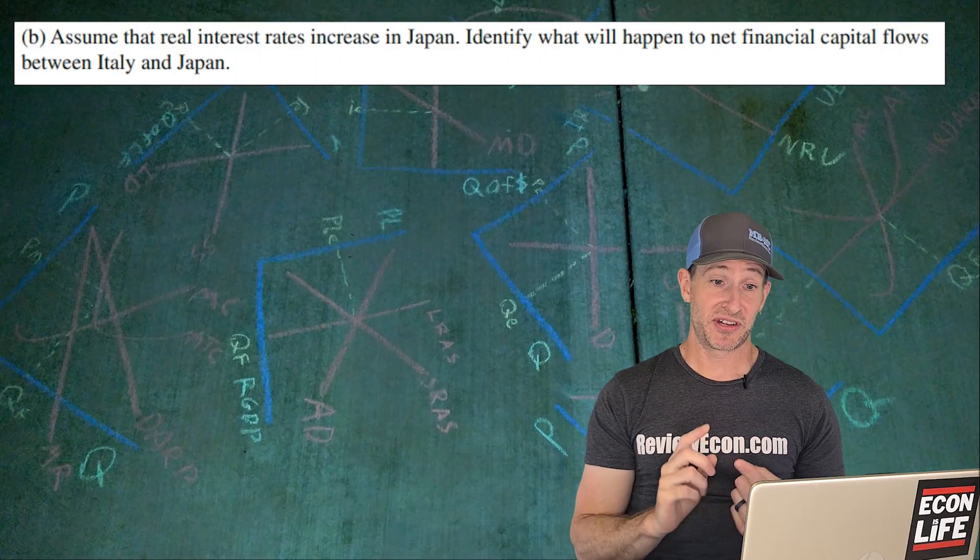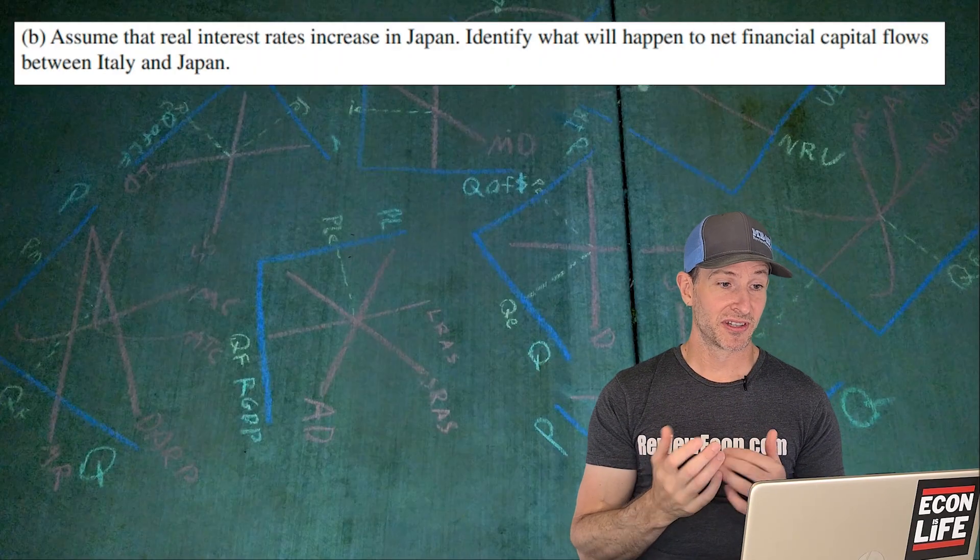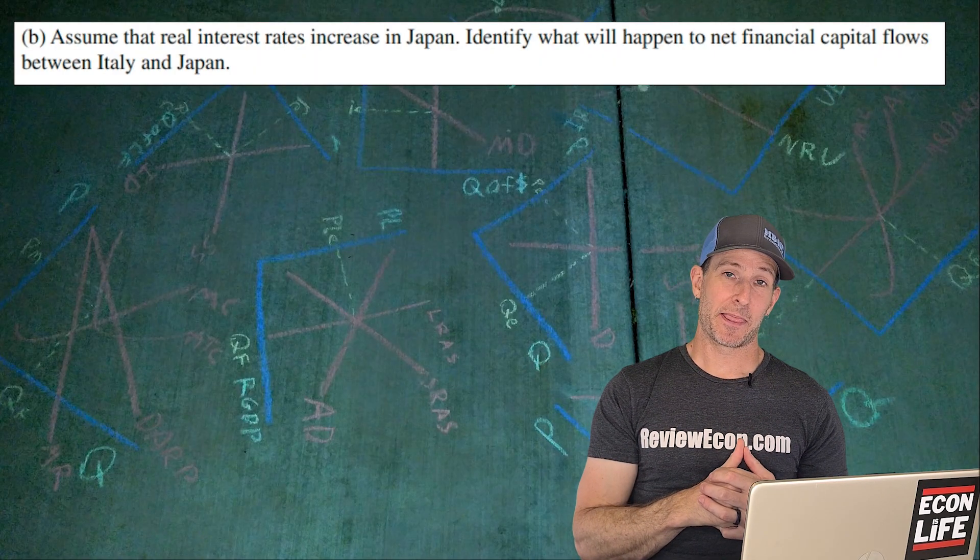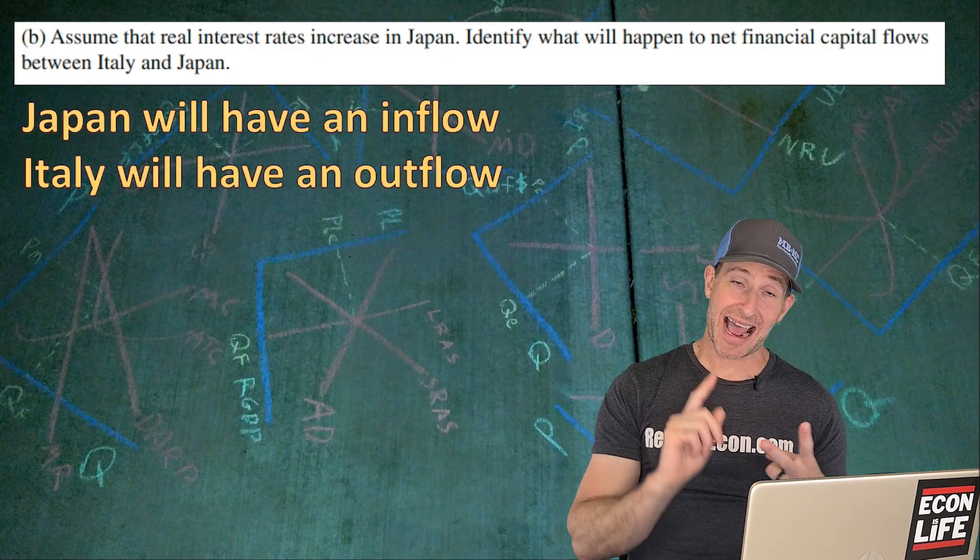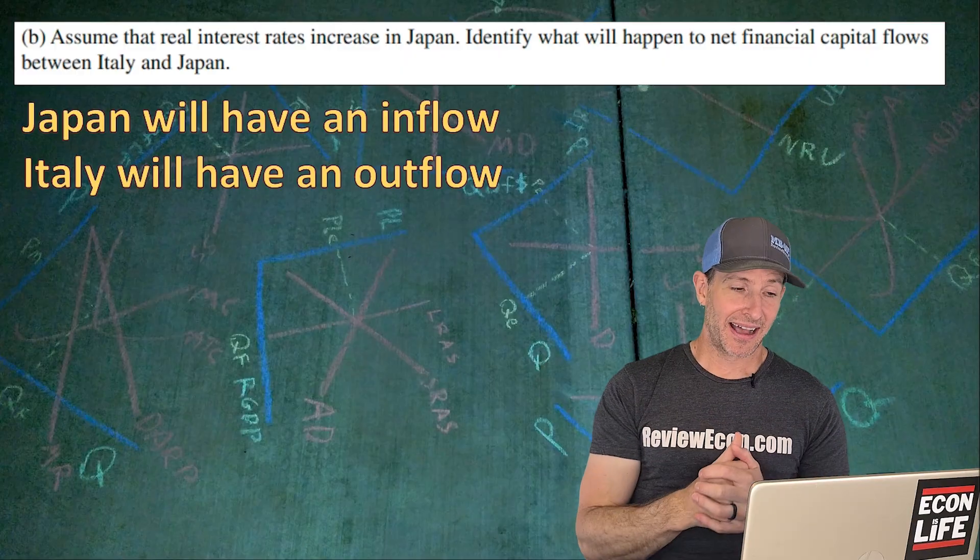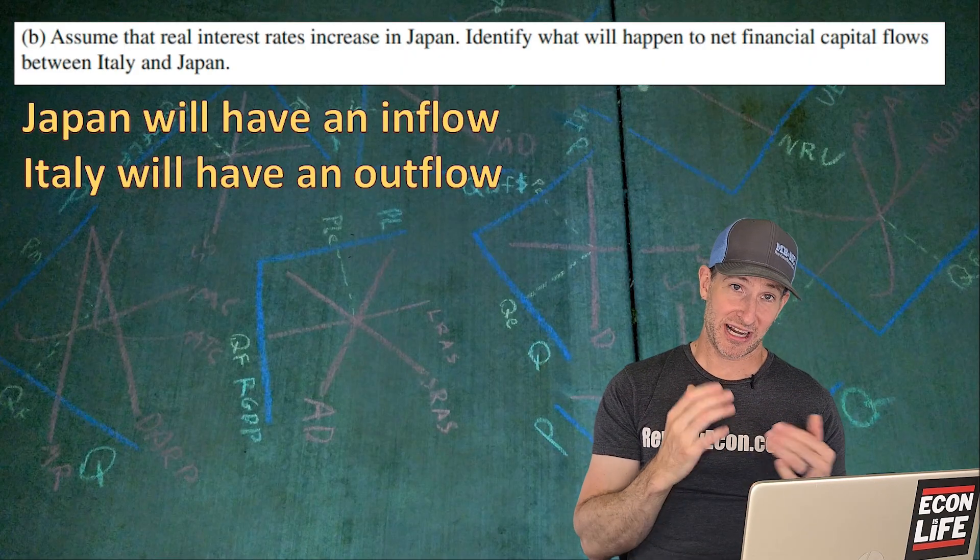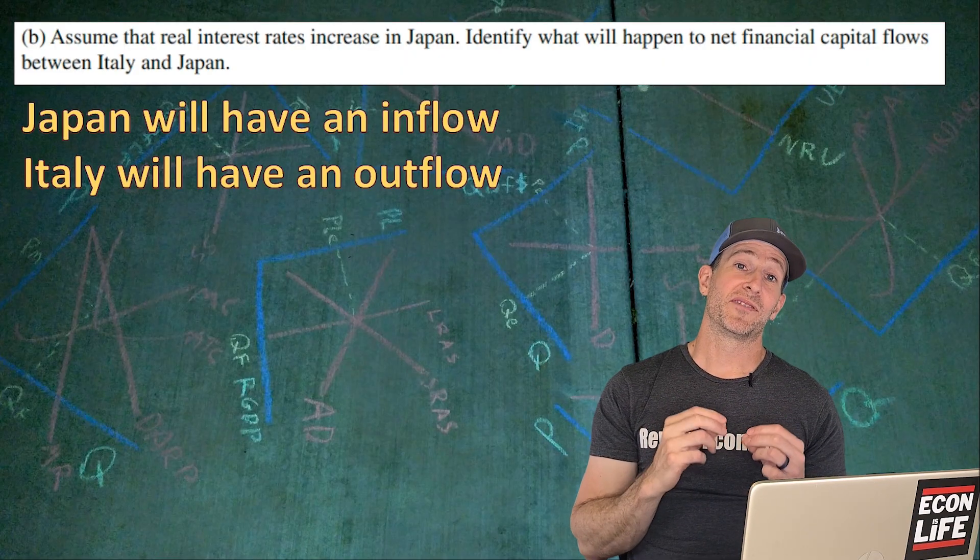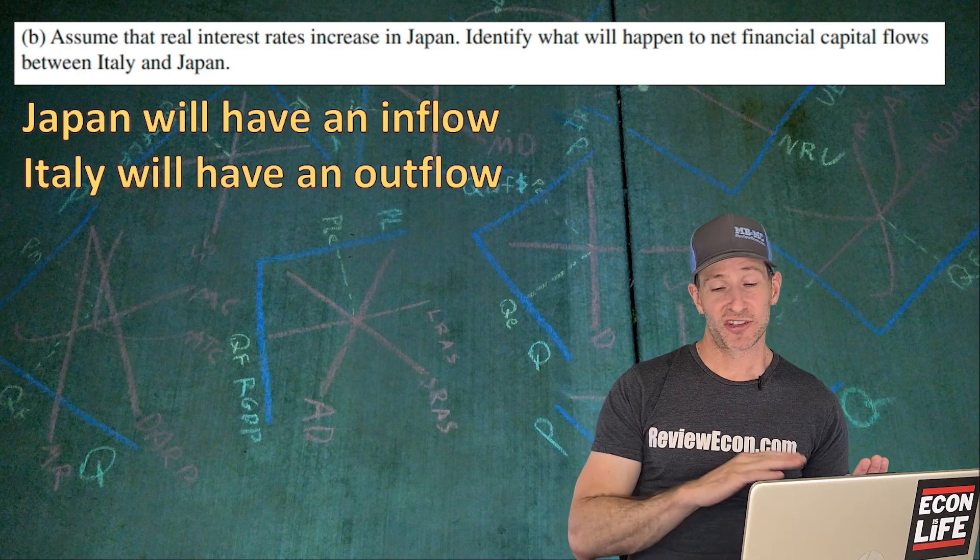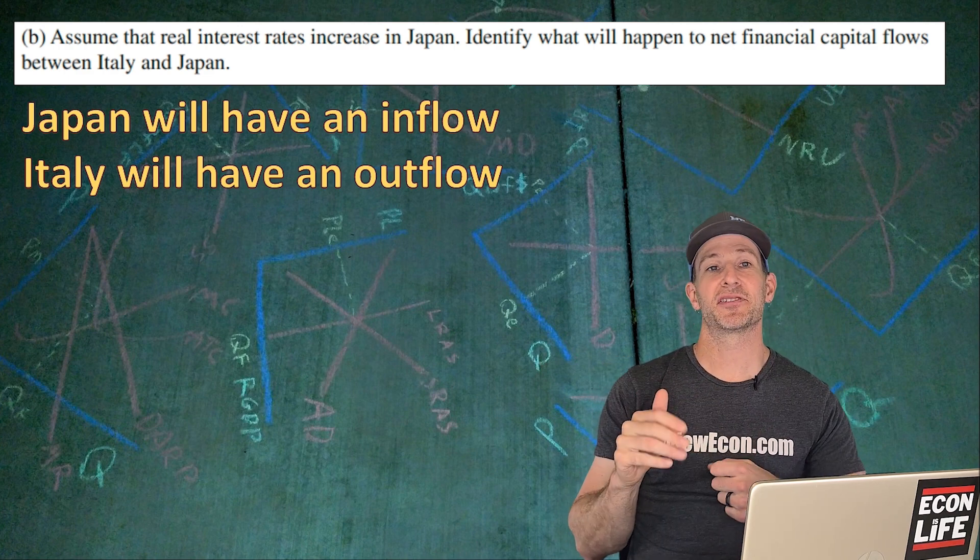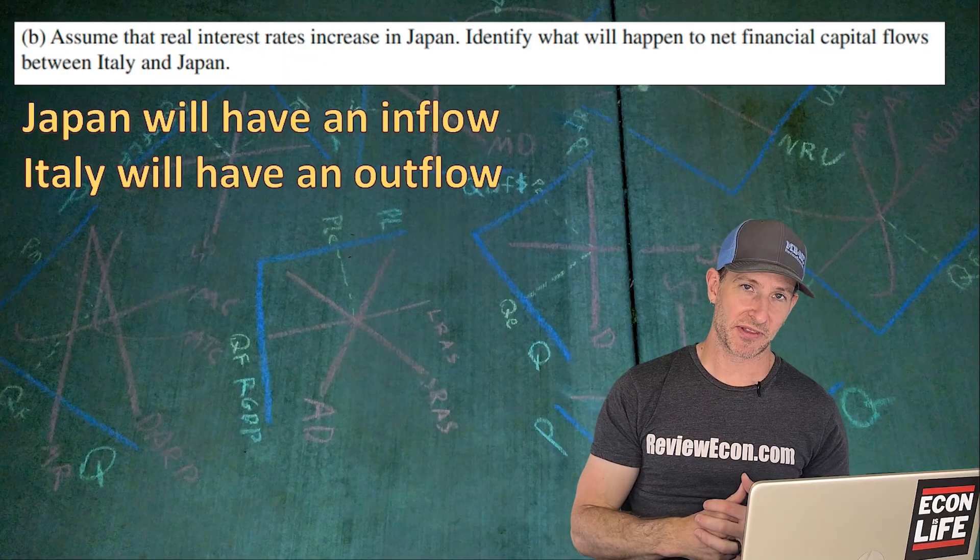For B, we're going to assume that the real interest rate increases in Japan. Identify what will happen to net financial capital flows. We're going to have an inflow into Japan and an outflow from Italy. Because remember interest rates are what foreign investors get paid, so they are going to seek those higher interest rates. Money flows to the country with the higher interest rate and out of the country with the lower interest rate.